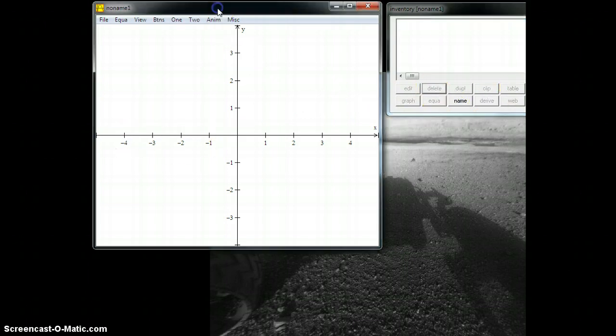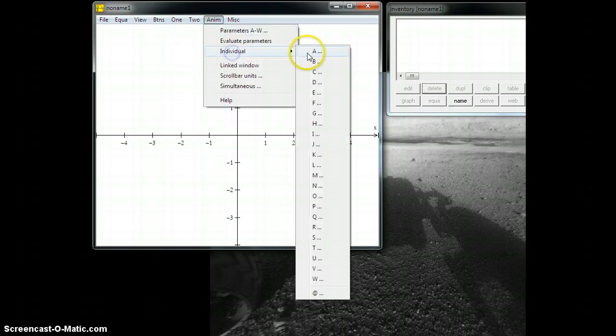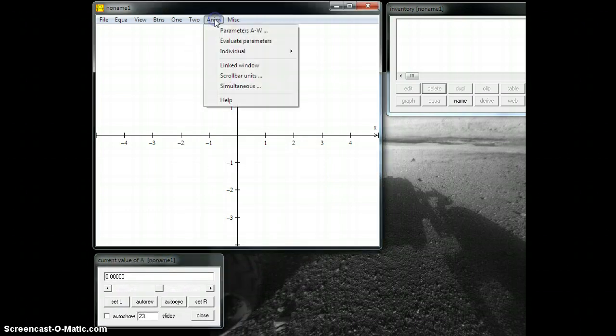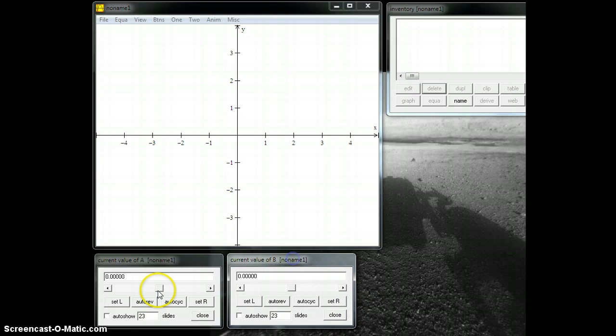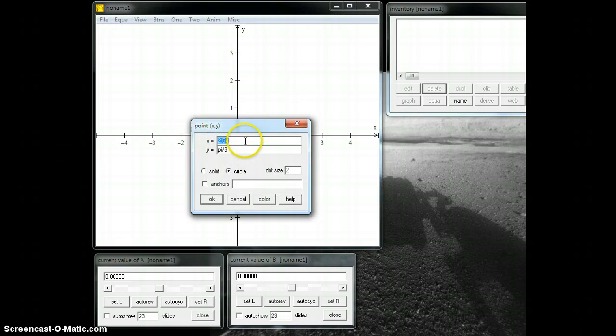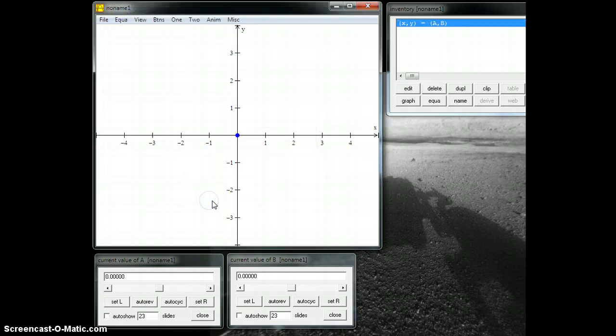One of the cool things we can do in here is we can create some parameters. Let's create parameters A and B. This is actually going to be the x,y pair that I'm going to train this neuron to find. So, let's go and plot a point at A,B. It's going to be solid, size 2. I can grab these scroll bars and move this dot around. Let's make it like 2, 0.65. Just made that up.